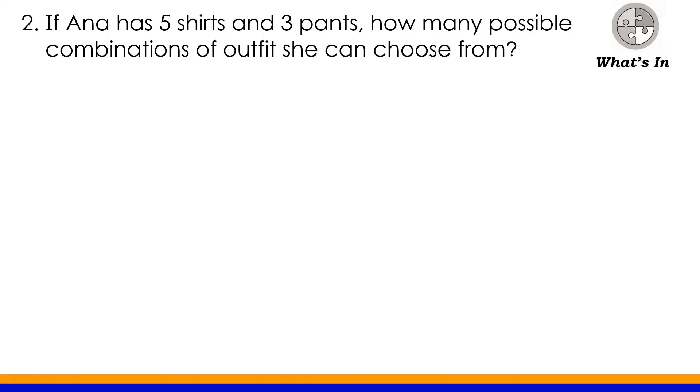Let's have number 2. If Anna has 5 shirts and 3 pants, how many possible combinations of outfits she can choose from? So para masolve natin yung problem na ito, class, gagamit tayo ng tree diagram. So halimbawa, ito yung mga outfits niya, class. 3 pants. Now in each pants, we will have or she will have 5 different shirts to choose. So example, ito yung mga shirts na pwede niyang pagpilian.